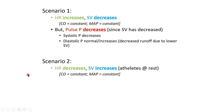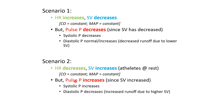Any guesses for pulse pressure in scenario two? The answer is right here — stroke volume has increased, which increases pulse pressure. Since pulse pressure equals systolic minus diastolic, and the systolic component has increased due to the larger stroke volume, the resultant pulse pressure is higher than normal.